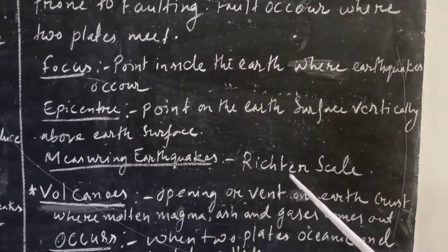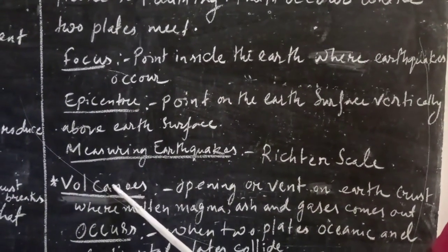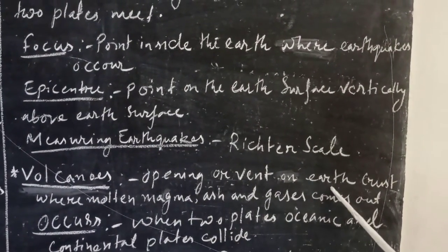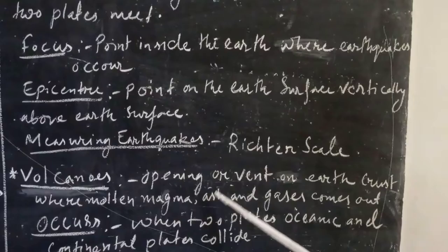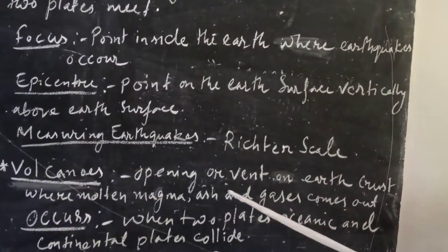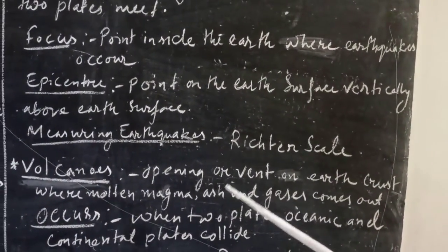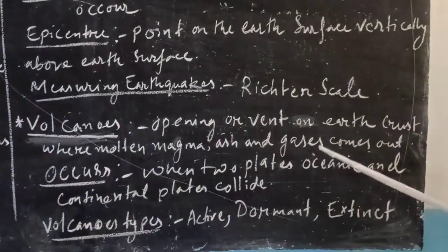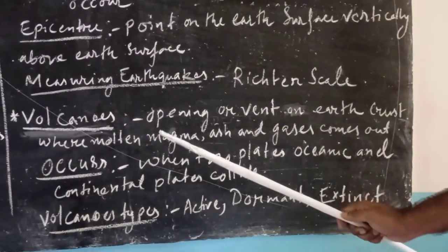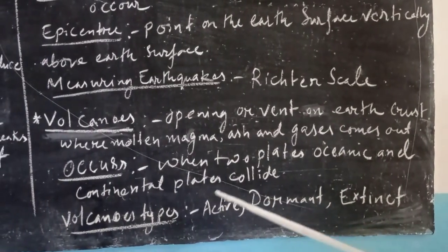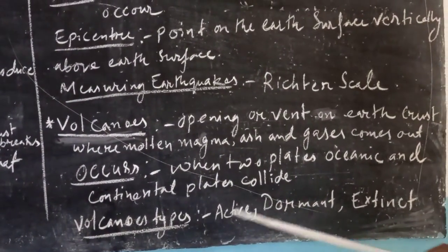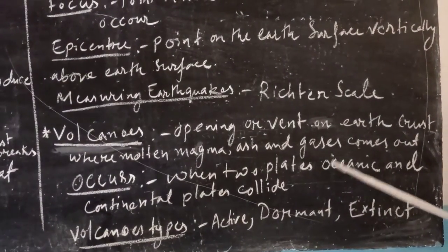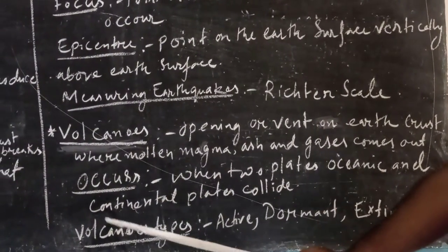Next, let us look at the next topic, that is volcanoes. What are volcanoes? Opening or vent of the Earth's crust where molten magma, ash, and gases come out are called volcanoes. How does it occur? When two plates, oceanic and continental plates collide, then volcanoes occur.